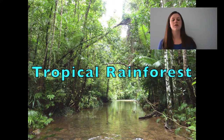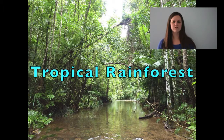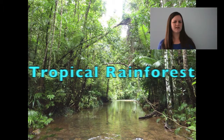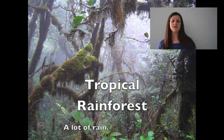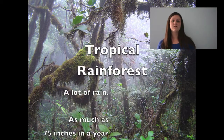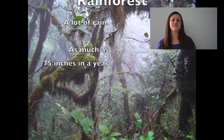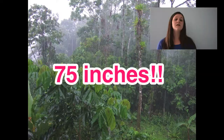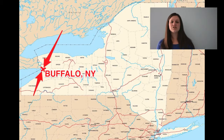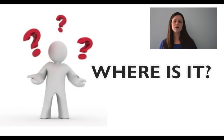Today we're going to be learning about the tropical rainforest. So what is the tropical rainforest anyways? Well, it's exactly what it sounds like. A rainforest is a forest where it rains a lot. Sometimes they get up to 75 inches a year of rain. Now that's a lot more rain than we get here.